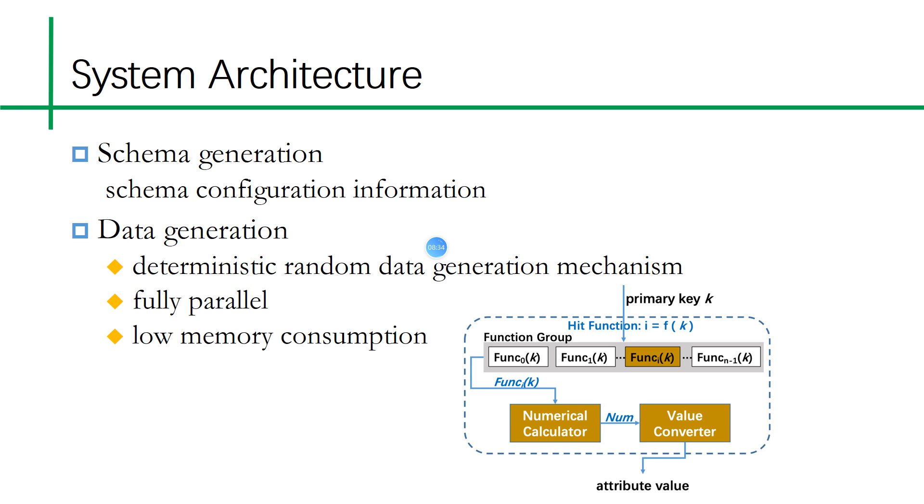The fixed schema limits the diversity of test cases. Therefore, we use random schema generation to give a schema configuration file that contains commonly used schema information: number of tables, table size, number of attributes, and so on. Our schema generator can randomly generate a schema based on a predefined configuration file.